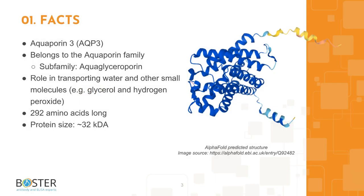Quick facts about AQP3: Aquaporin-3 belongs to the aquaporin family, more specifically the aquaglyceroporin subfamily. It is an integral membrane protein known for its role in the transport of water and other molecules such as hydrogen peroxide and glycerol. AQP3 is 292 amino acids long and runs around 32 kilodaltons on a western blot.